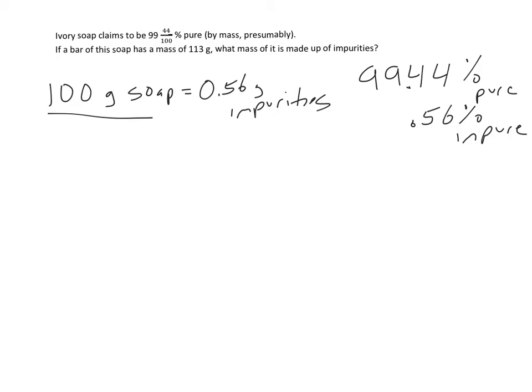So in this situation we have 113 grams of actual soap, and I want to find out how much of it contains impurities. So I'm just going to multiply by every 100 grams of actual soap, there are 0.56 grams of impurities. And I just multiply this out and I get a conversion, just like I would do anything else.